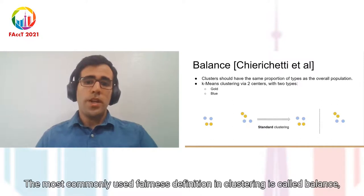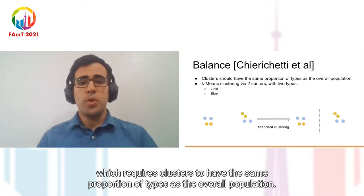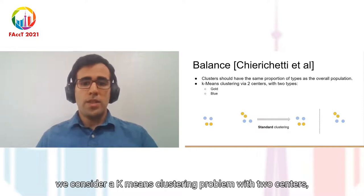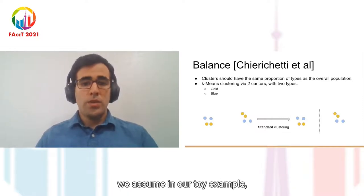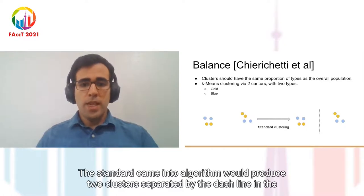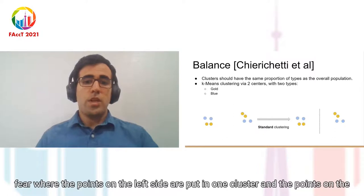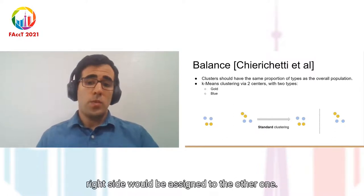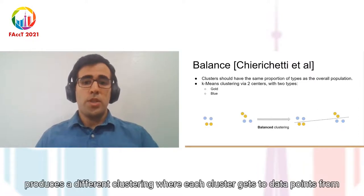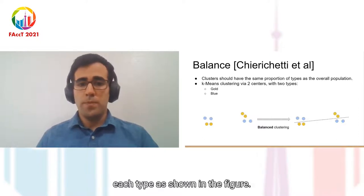The most commonly used fairness definition in clustering is called balance, which requires clusters to have the same proportion of types as the overall population. To see how balance works, we consider a k-means clustering problem with two centers. We assume in our toy example each data point is either blue or gold. The standard k-means algorithm would produce two clusters separated by the dashed line, where the points on the left side are put in one cluster and the points on the right side would be assigned to the other one. But a fair clustering with regard to balance produces different clustering where each cluster gets two data points from each type, as shown in the figure.